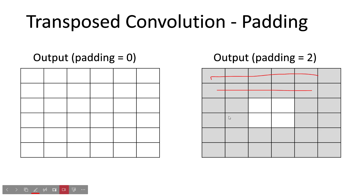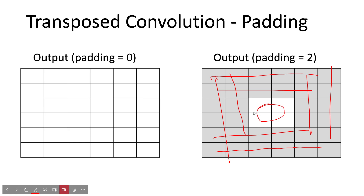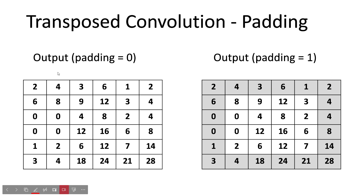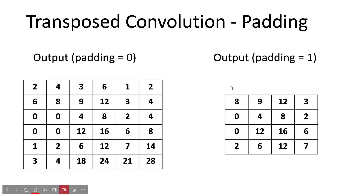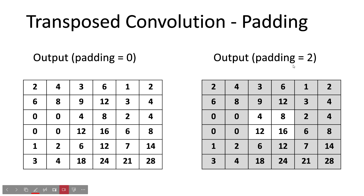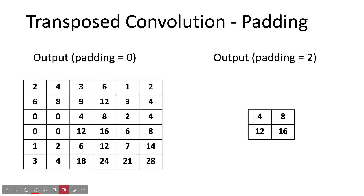If padding=2, we remove two rows from the top and bottom and two columns from left and right. What's left is a 2×2 output. From the previous 6×6 result, removing those borders leaves two cross two. You can verify this with the formula as well. Let's now confirm in code.